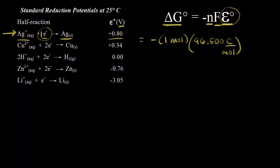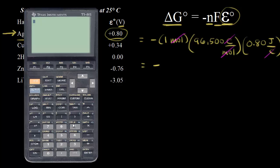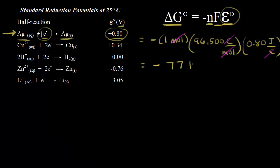We multiply Faraday's constant by the voltage, which is 0.80 — writing it as joules per coulomb so we can see the units cancel. Moles of electrons cancels out, coulombs cancels out, and we get our answer in joules. So this is negative one times 96,500 times 0.80, which gives us negative 77,200 joules, or approximately negative 77 kilojoules — the change in free energy accompanying the formation of one mole of silver.